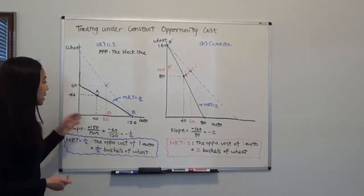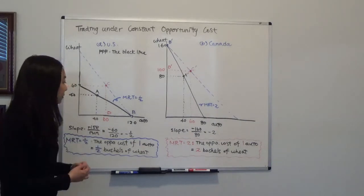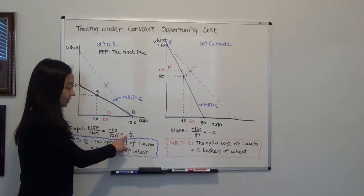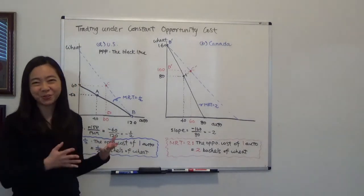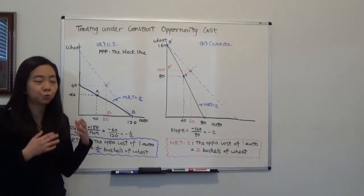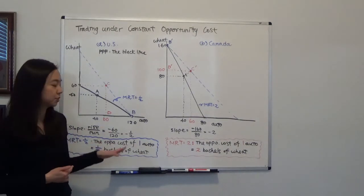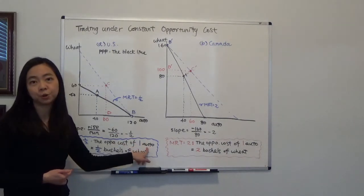What does that mean? That means in order to produce one auto, you have to sacrifice a half bushels of wheat. So you get it. The slope of the production possibility curve will give you the opportunity cost of the good on the horizontal axis, in this case is the automobile.